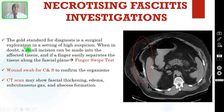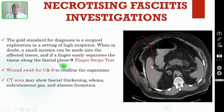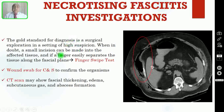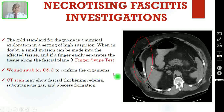The gold standard for diagnosis is surgical exploration in a setting of high suspicion. When you suspect necrotizing fasciitis, you must make a small incision into the affected tissue and put your finger inside. If your finger separates the tissue plane along the fascial plane, your patient is suffering from necrotizing fasciitis. This test is called the finger swipe test. You also have to send wound swab for culture and sensitivity to confirm the organism and decide which antibiotic to give.